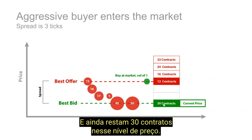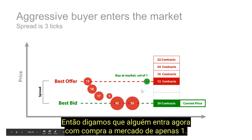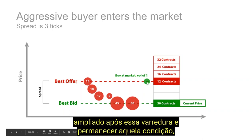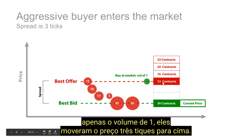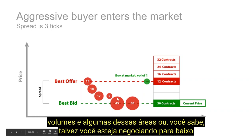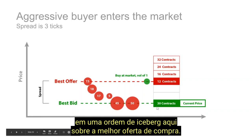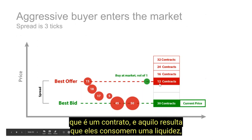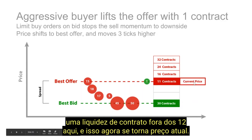So now this one actor came into the market very aggressively with 150 contracts: one swept the book lower, one swept just one price level and was absorbed, and that last 50-lot was completely absorbed at that price level, leaving 30 contracts still remaining. Someone jumps in now with a market buy volume of just one — if the spread had widened out after that sweep, with just a volume of one they've moved the price up three ticks. This can allude to trapped volume in some of these areas, or maybe you're trading into an iceberg order on the best bid.